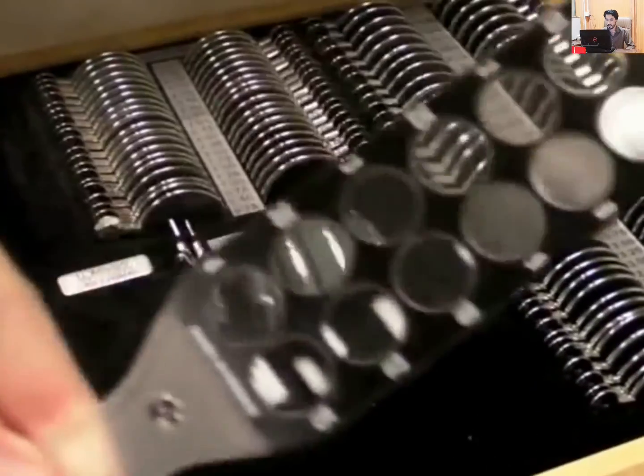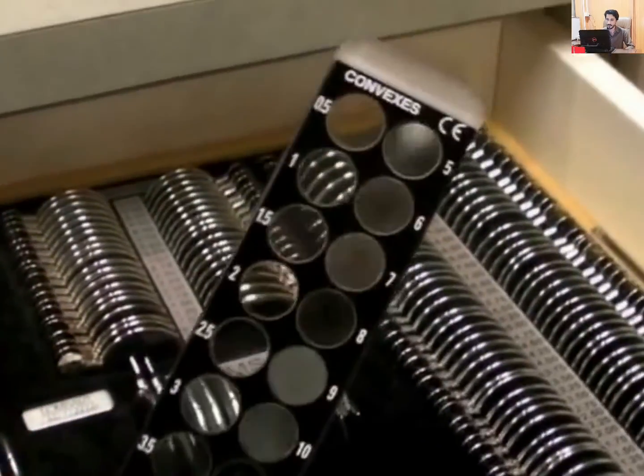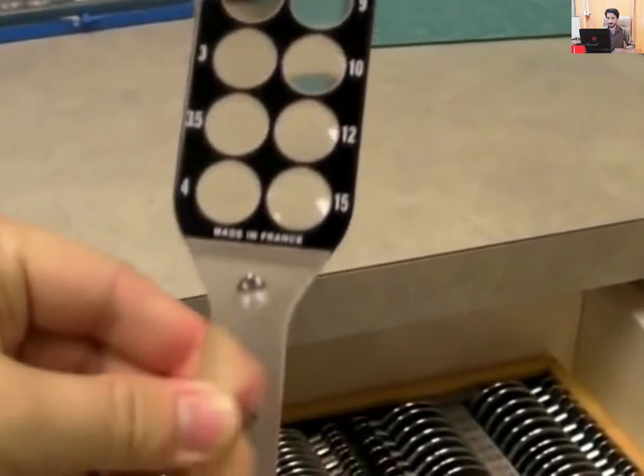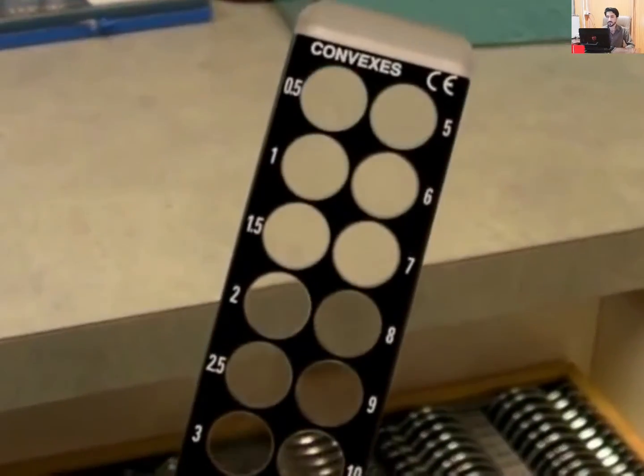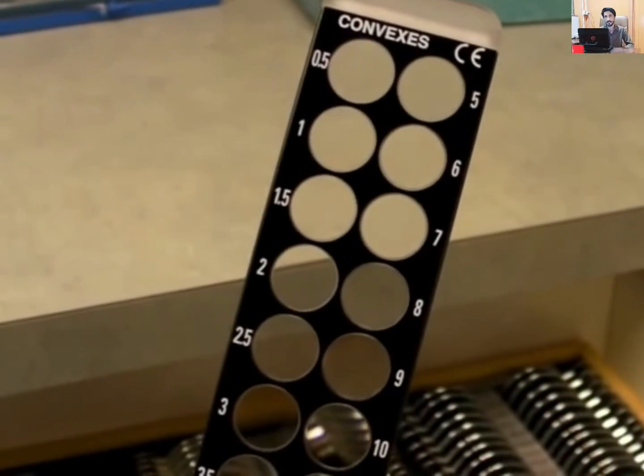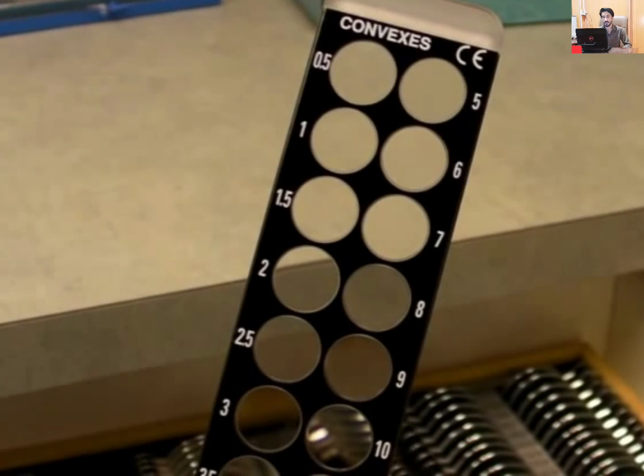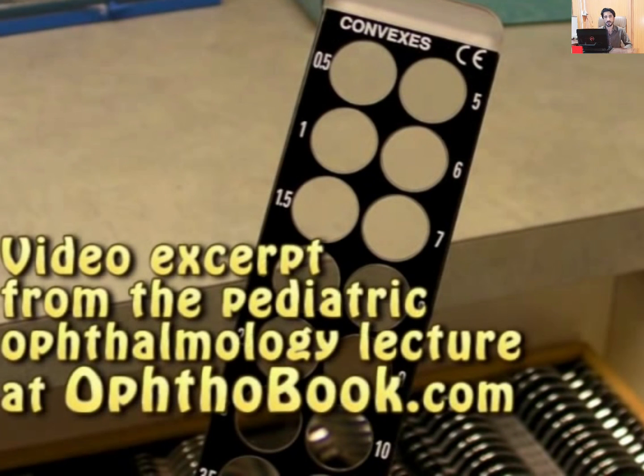If you have an adult, you can use a lens rack like this, a retinoscopy bar. This is nice in adults because you don't have to constantly switch lenses in order to find the right one. It doesn't work well in kids because kids don't like having this big giant thing in front of their face. They're constantly wanting to grab it. So with kids, you end up using loose lenses.